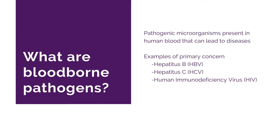What are bloodborne pathogens? They are pathogenic microorganisms present in human blood that can lead to diseases. Examples of primary concern include Hepatitis B (HBV), Hepatitis C (HCV), and Human Immunodeficiency Virus (HIV).